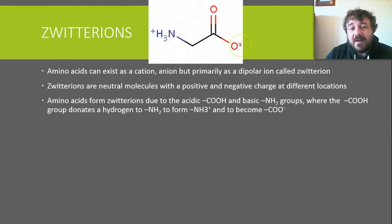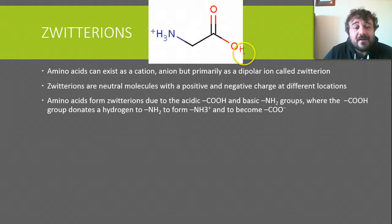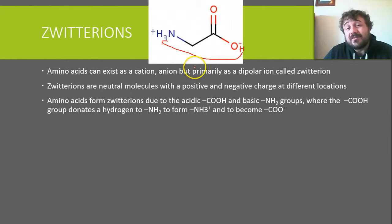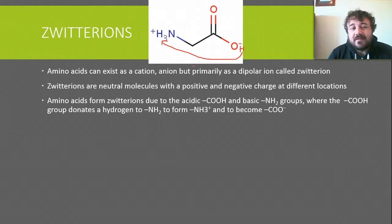Zwitterions basically form because you've got the acidic carboxylic acid — which would normally have an H there — and you've got the basic NH2 group. The NH2 is basic; the COOH is acidic. The hydrogen is donated from the carboxylic acid to the amine group, making it an anion and a cation at both ends. So the NH2 forms the NH3+ ion, and this becomes a COO- side.